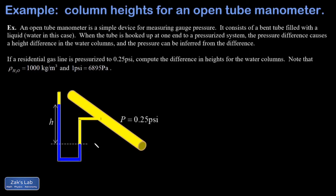The greater pressure inside that pipe is going to push the water down and create a height difference in the column. In this particular problem we know the pressure in the pipe and we're trying to show what the height difference is going to be on the left and right side.